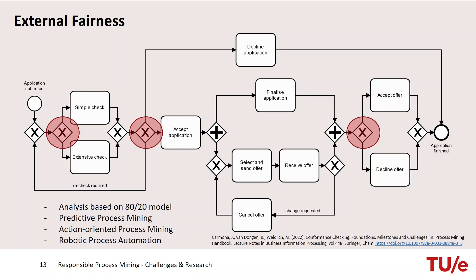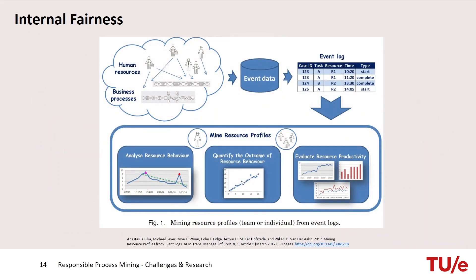Going back to the Kinderopvangtoeslag: if you immigrate to the Netherlands and do your tax declaration, you had to fill out a 50-page paper form, while Dutch citizens just click online. That's a process optimization that didn't consider immigrants at all. This is about external fairness — when you optimize processes, you can inadvertently discriminate against certain groups. Fortunately, this has since been improved.